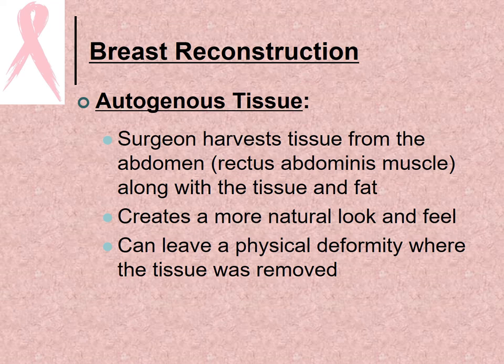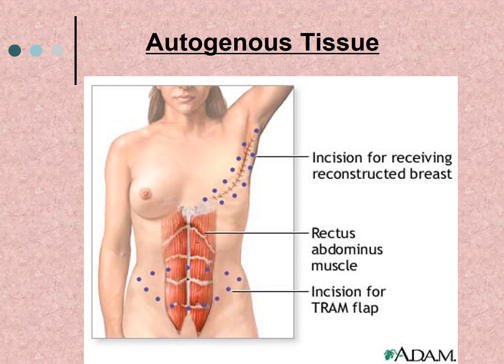Surgeons can also use autogenous tissue, harvesting tissue from the abdomen — usually the rectus abdominis muscle along with surrounding tissue and fat. This creates a breast with a more natural look and feel, but it can leave a physical deformity where the tissue was removed. The procedure involves a large incision to reposition the rectus abdominis muscle into the breast area.